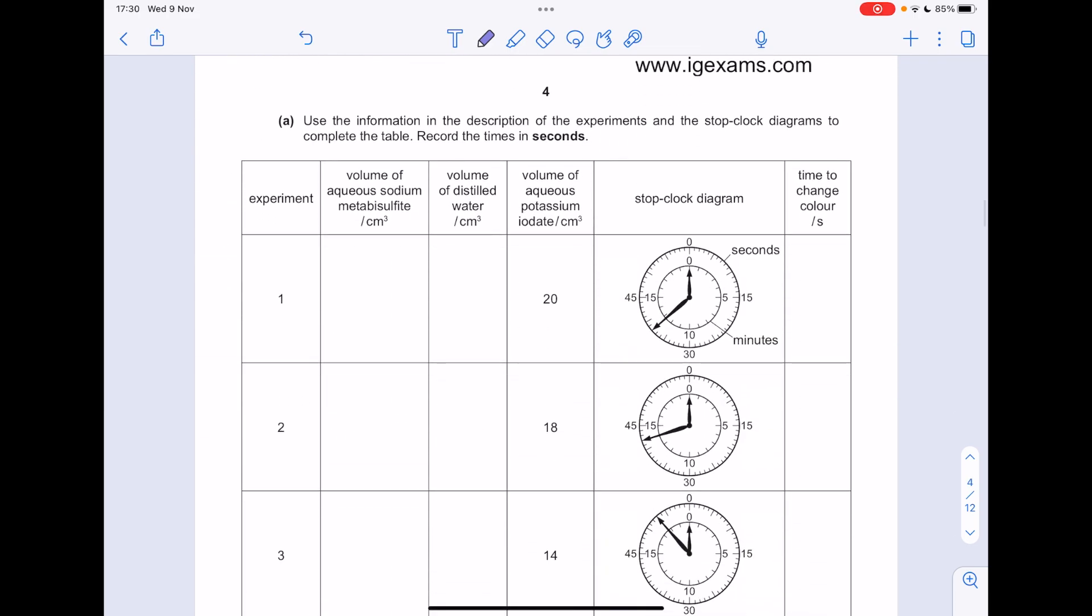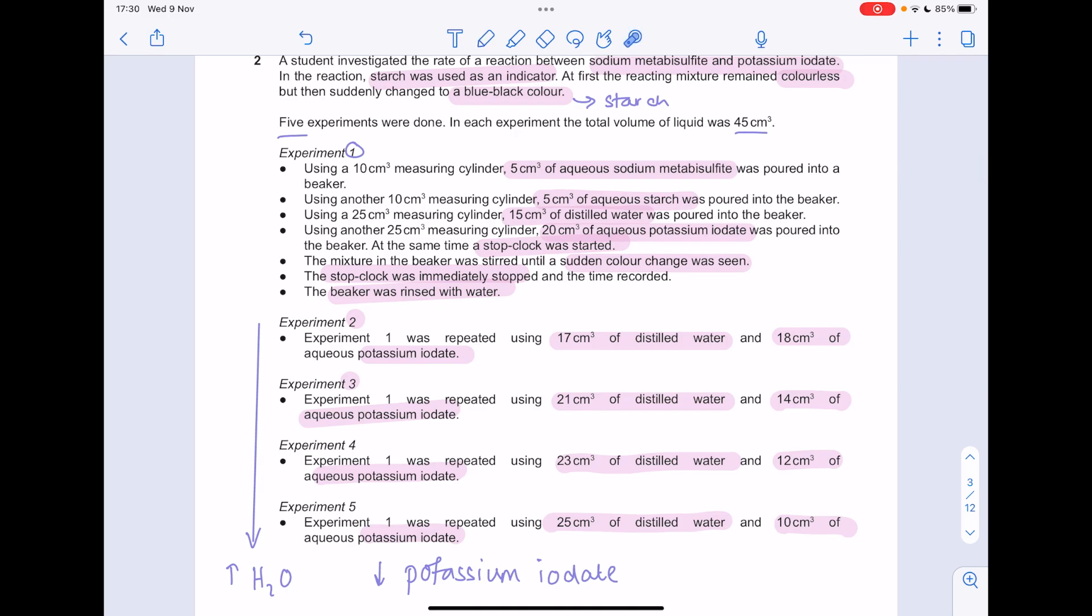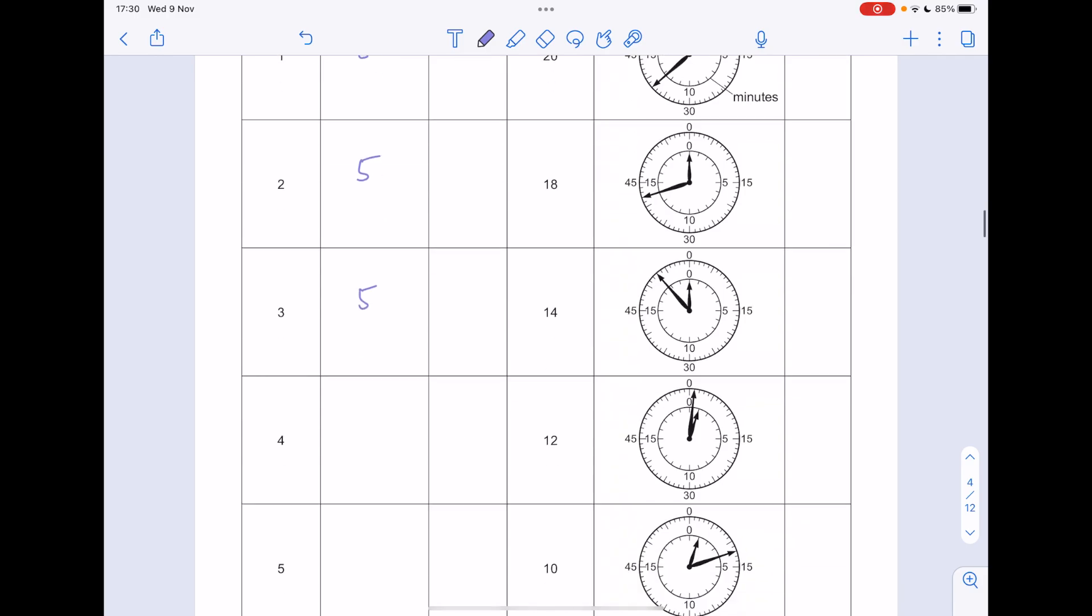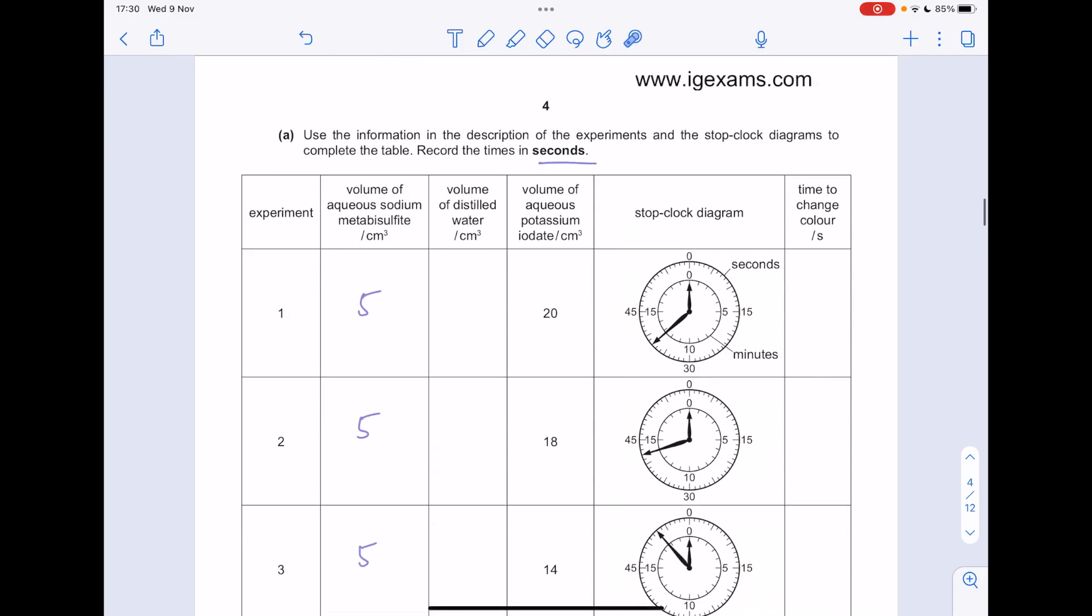Use the information in the description of experiments and the stop clock diagrams to complete the time, record the times in seconds. So what is our volume of aqueous sodium metabisulfite? It tells us it's five centimetres cubed. And then we're repeating the methodology, which means we can just pop a five. Don't put units in the main part of the table. That's already included up here.